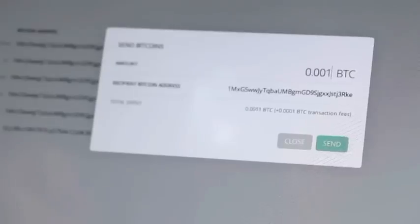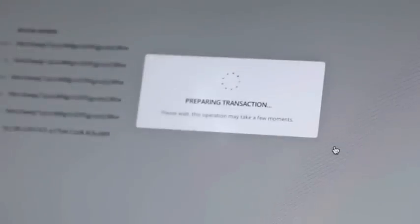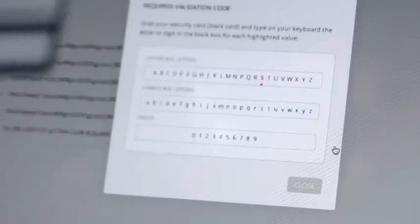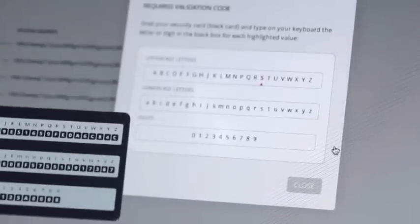To send Bitcoins to another wallet, fill in the amount and the address of the recipient. Before validating this transaction, a second verification factor will appear after a few seconds. Take your security card and fill in the verification codes as requested.